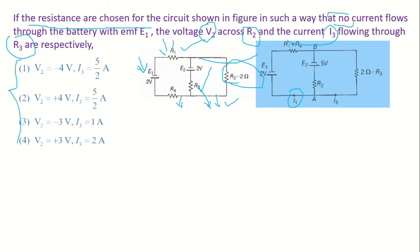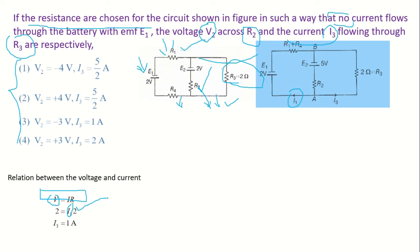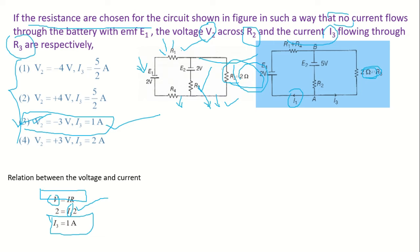We know the voltage-current relation V = IR. V is given as 2 V, I3 is unknown, and R3 is given as 2 Ω. Substituting, I3 = V/R3 = 2/2 = 1 A. Looking at the options, I3 = 1 A is only in option 3, so you can directly mark that answer. If you have time, calculate V2 as well; otherwise save time for tougher questions.